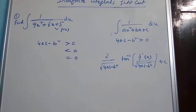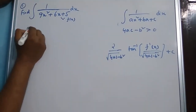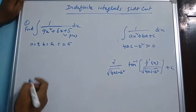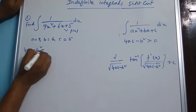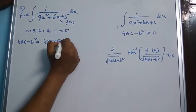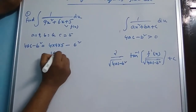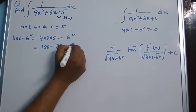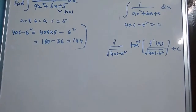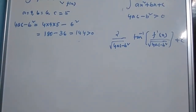Here, comparing with ax squared plus bx plus c, we have a equals 9, b equals 6, and c equals 5. Now computing 4ac minus b squared: 4 into 9 into 5 minus 6 squared equals 180 minus 36, which equals 144. So the value of 4ac minus b squared is 144, which is clearly positive.